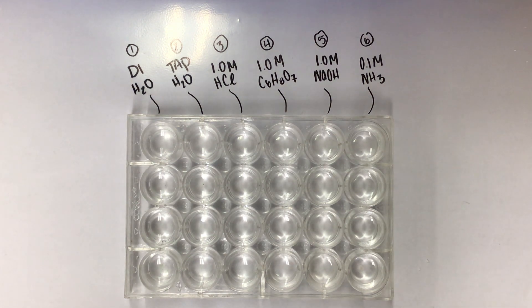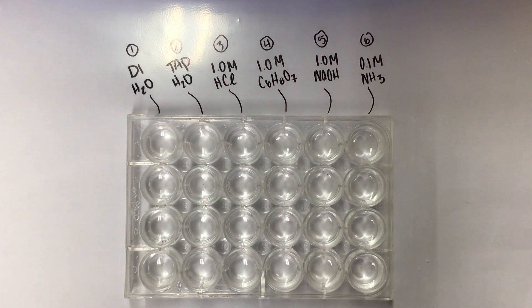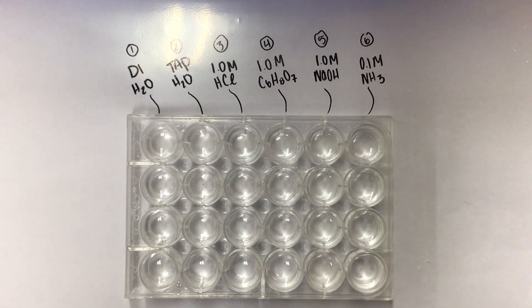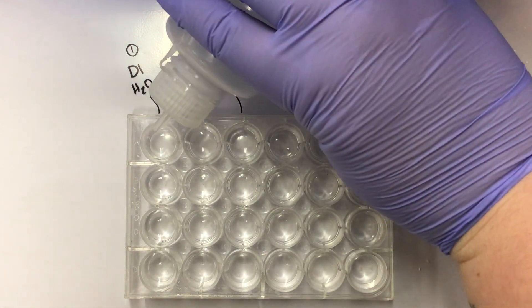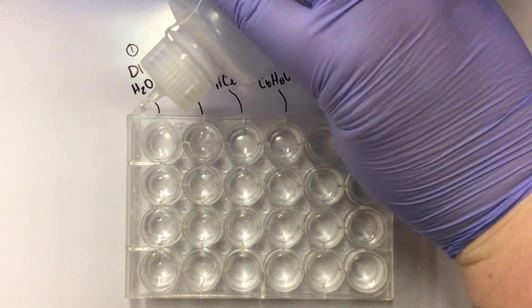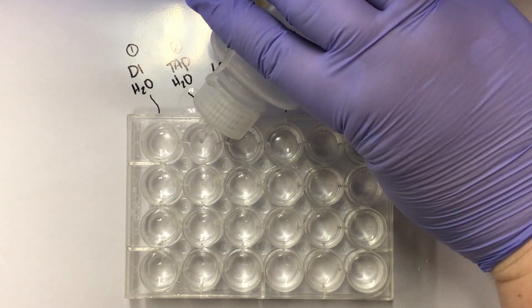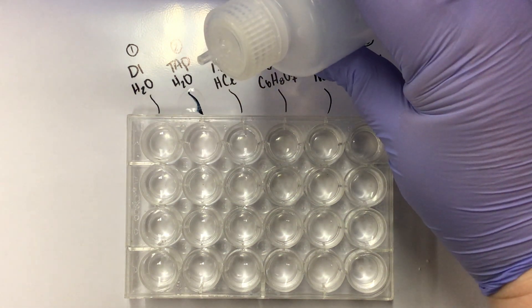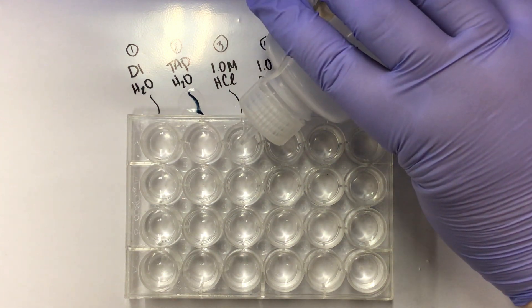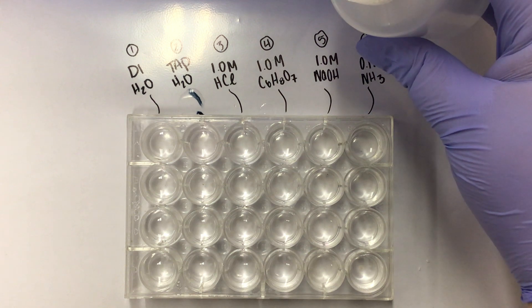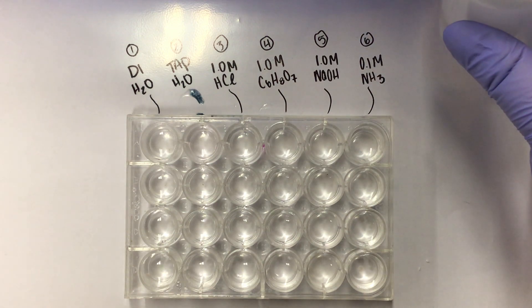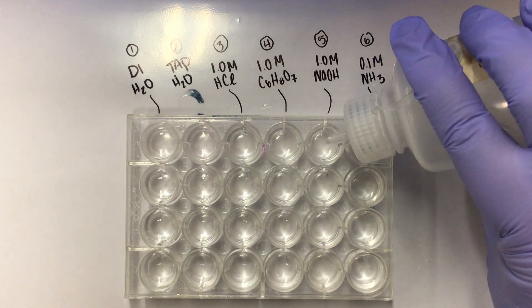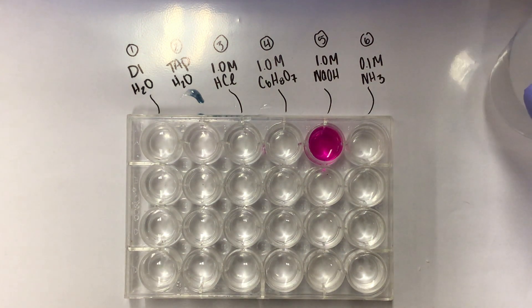Now we are moving on to the phenolphthalein indicator test. Here's our phenolphthalein indicator, clear and colorless to start out. I'm going to put just a couple drops in each of these first wells. There's our DI, our tap, HCl, C6H8O7, NaOH, and NH3.